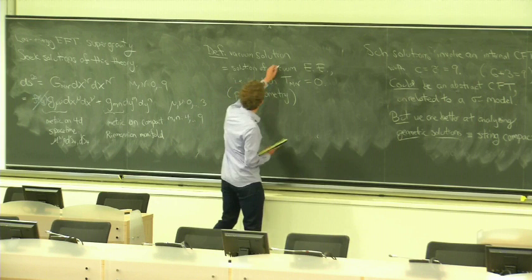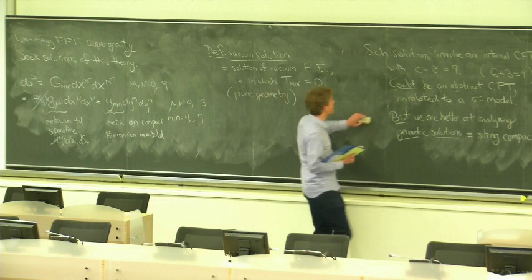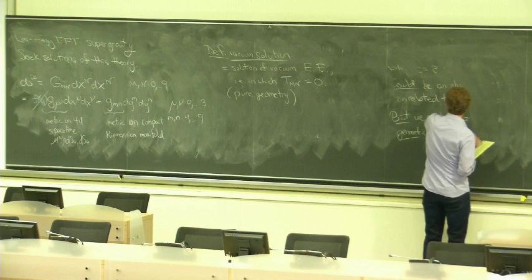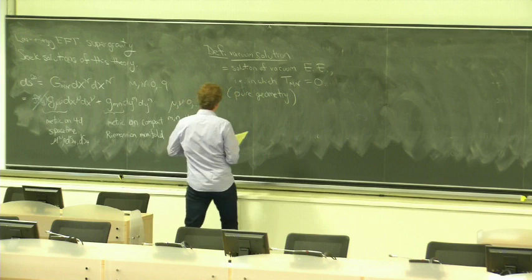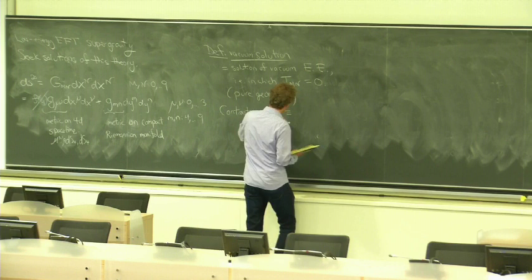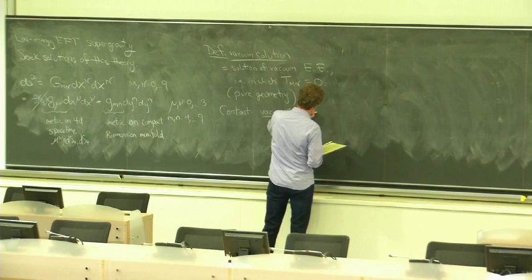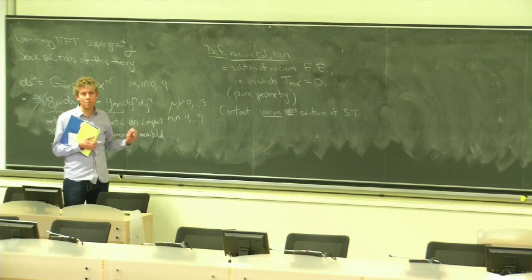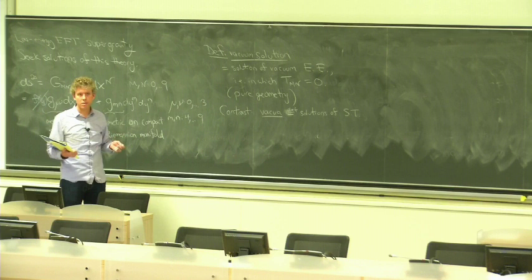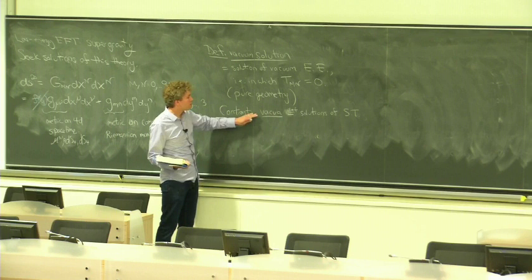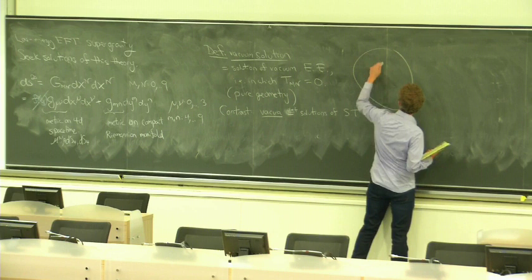Such a solution is pure geometry. Now, we have to contrast that. We'll carefully contrast that to a similar sounding phrase, which is not the same thing at all. So, contrast vacua, which by definition are just solutions of string theory. If I say that I have a string vacuum, I mean I have a solution of string theory. Often, it will be implicit, and we'll come back to this. Often, it will be implicit if I tell you I have a vacuum that it doesn't come in a family. That it's isolated. But, different workers use different notions.